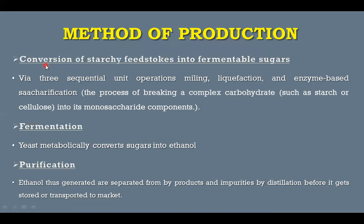In the conversion of starch feedstock, three unit operations are performed: first is milling, second is liquefaction, and third is enzyme-based saccharification. In the milling process, the conversion of corn into powder takes place. Then liquefaction takes place where water is added and it is converted into starch. After that, the enzyme-based saccharification process takes place — this is the process of breaking a complex carbohydrate into its component simple sugars, converting starch or cellulose into glucose solution. After saccharification, it is sent to the fermentation tank where fermentation takes place in the presence of yeast and we get ethanol from the sugary substances.